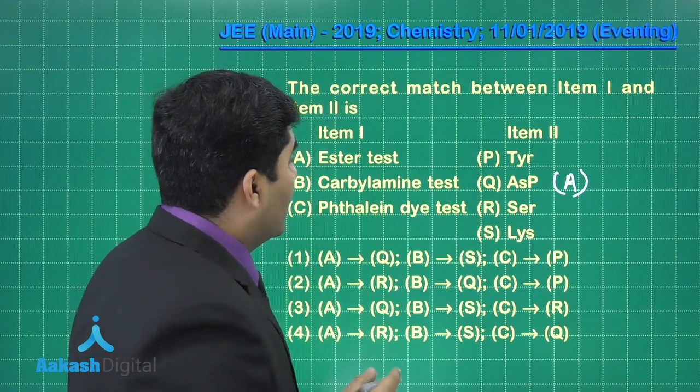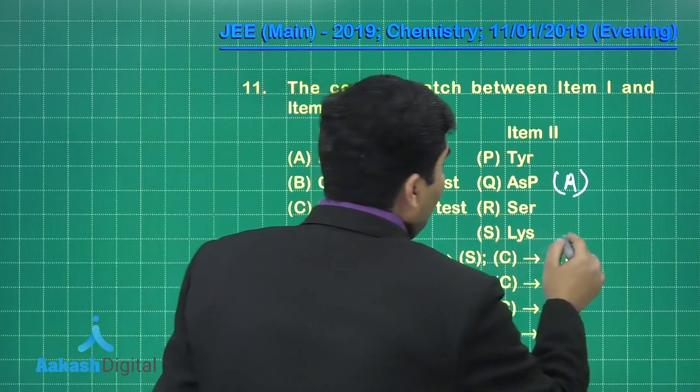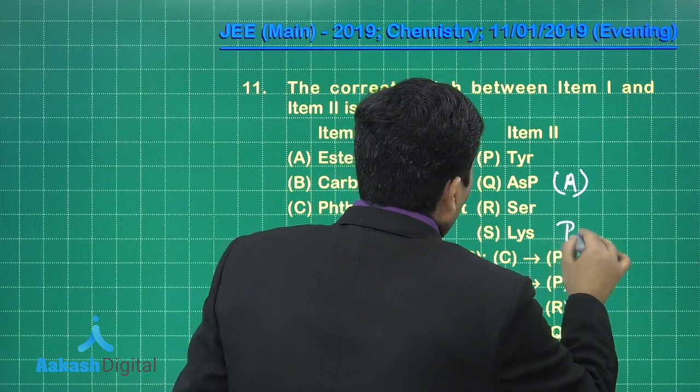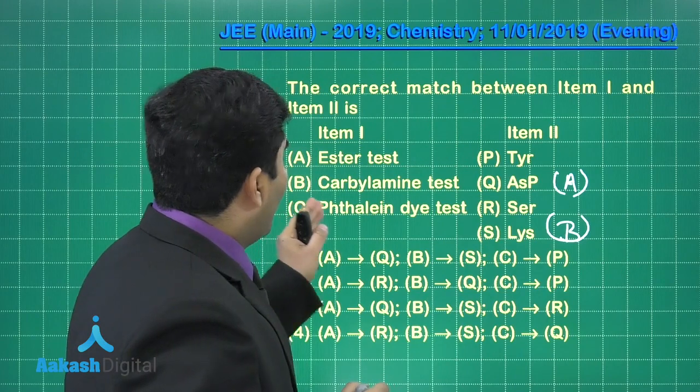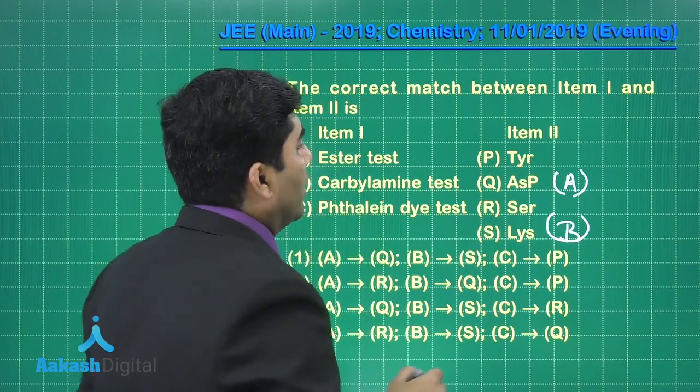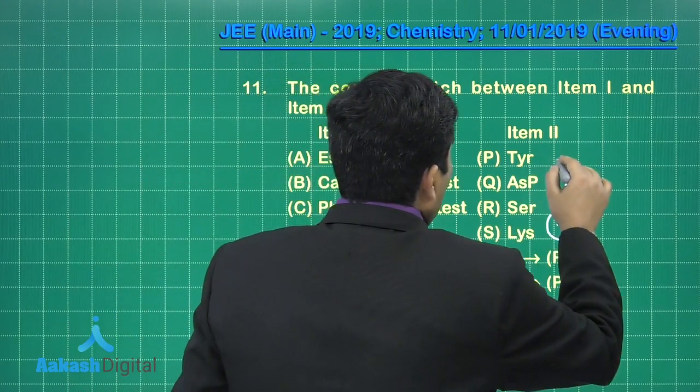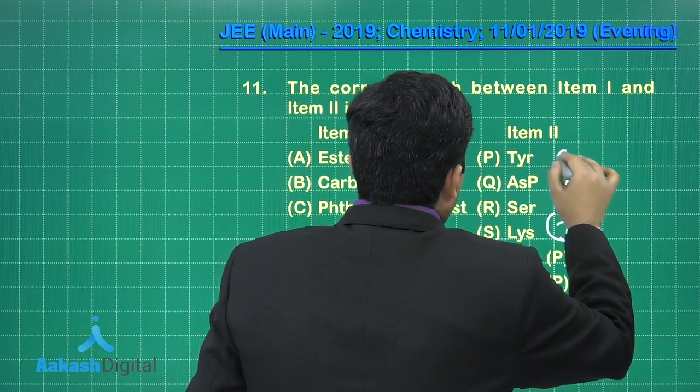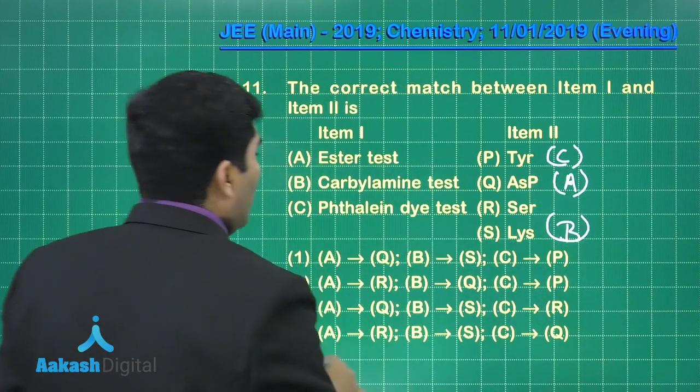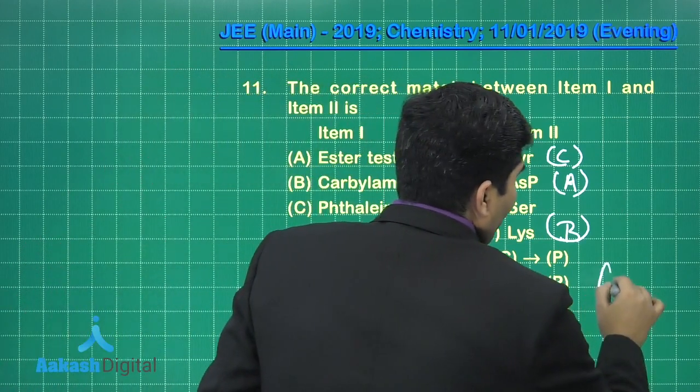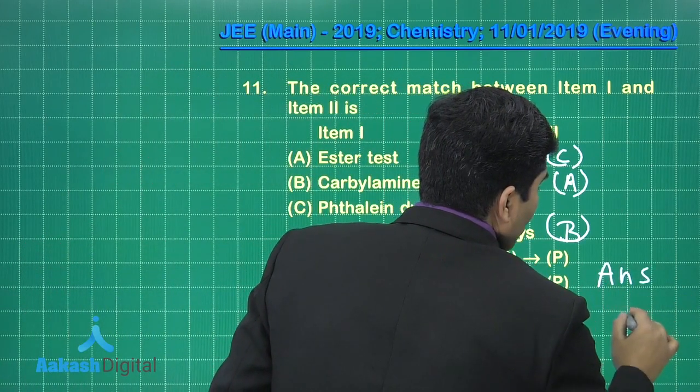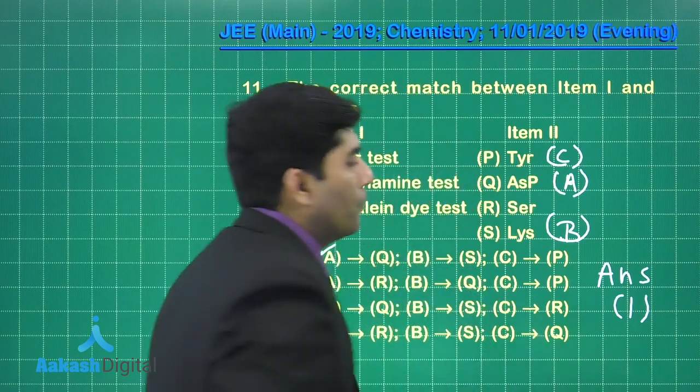Carballylamine test is given by lysine, so it will be B, and thaline dye test will be given by tyrosine, so it will be C. So the answer will be first, final answer is option number one.